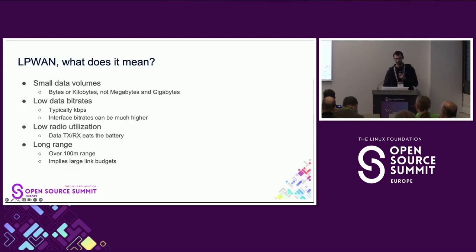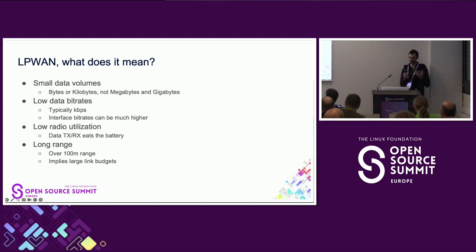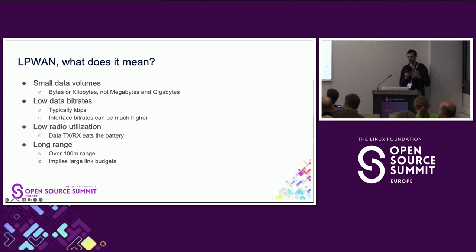LPWAN — what does it actually mean? LPWAN as a concept encompasses a few different aspects. Not all of them necessarily apply strictly to every technology, but a majority will. First, LPWAN networks typically have small data volumes — normally bytes or kilobytes, not megabytes or gigabytes. Going along with that, you've also got low data bit rates. Kilobits per second is typical, although some interfaces do support megabits.